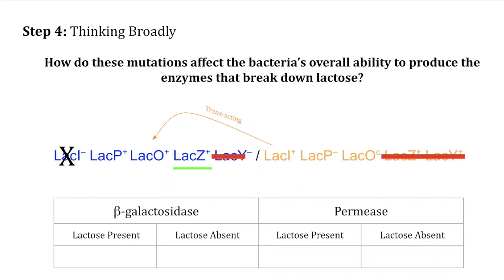The final step is synthesizing all the conclusions we have made about each operon to determine whether the bacteria is able to produce beta-galactosidase and permease when lactose is present and absent. The orange operon cannot transcribe any of its structural genes, so the production of beta-galactosidase and permease is dependent on the blue operon. Looking at the blue operon, it can transcribe its structural genes; however, lacY is mutated, so the bacteria is never going to be able to produce permease. We know that lacZ can be transcribed and the blue operon is regulated normally, so when lactose is present there should be production of beta-galactosidase, and when lactose is absent there should not be any beta-galactosidase produced. And with that, the problem is now solved.